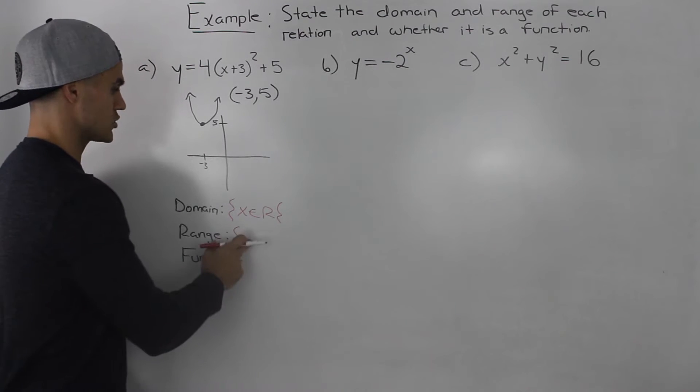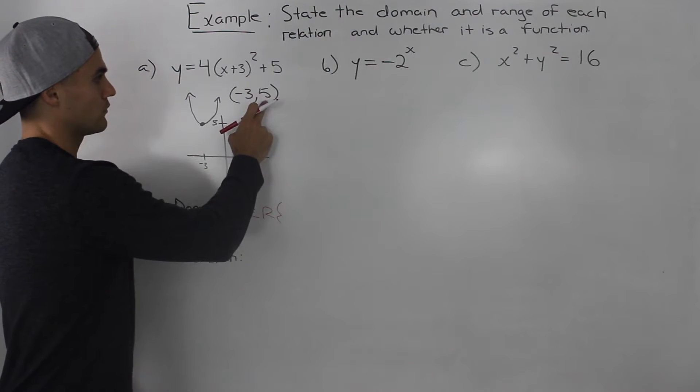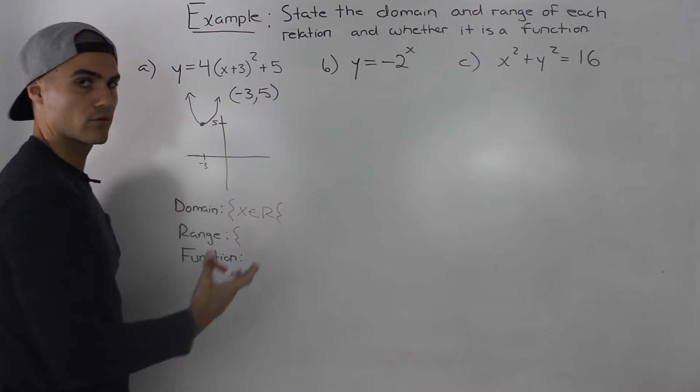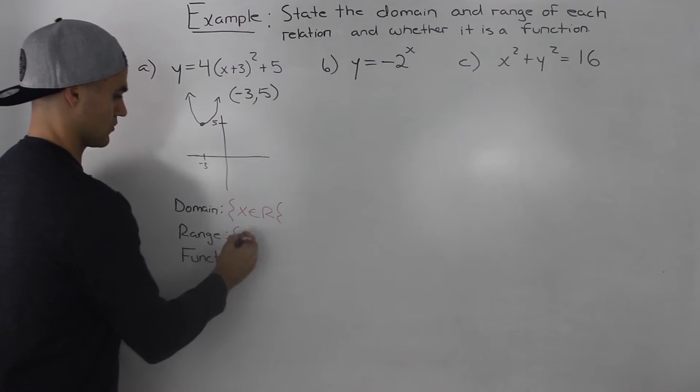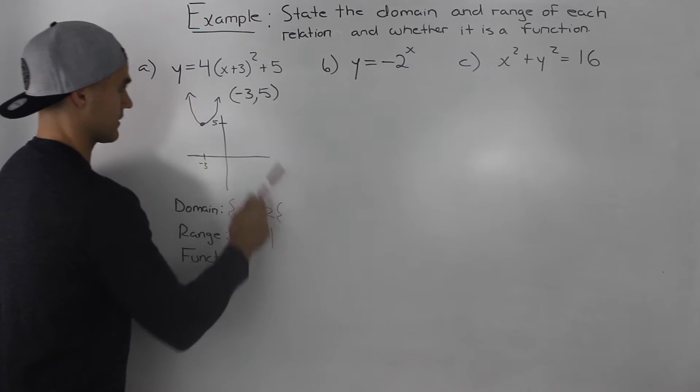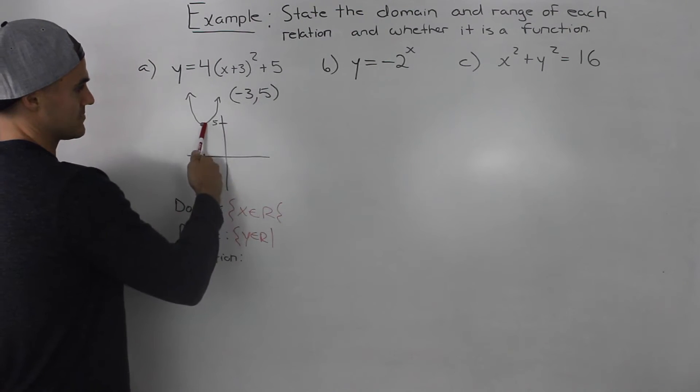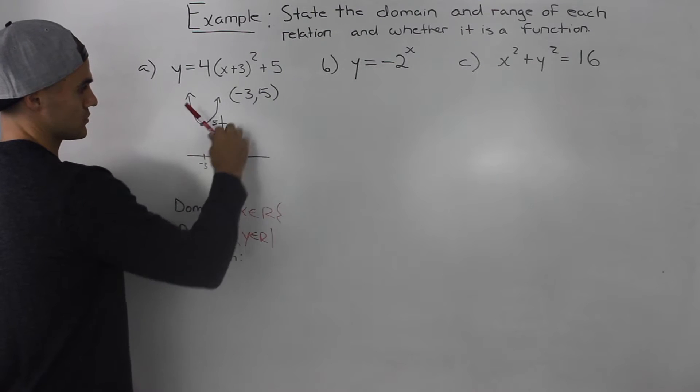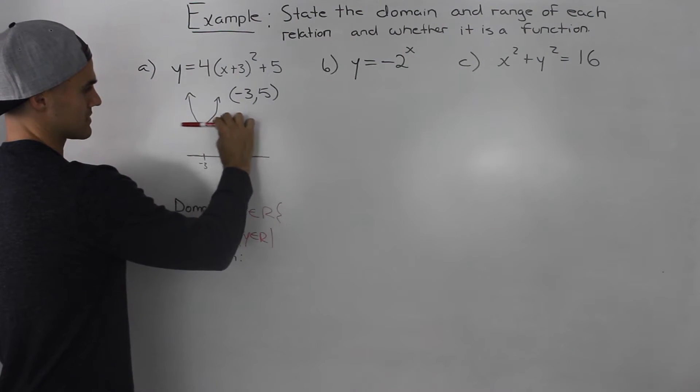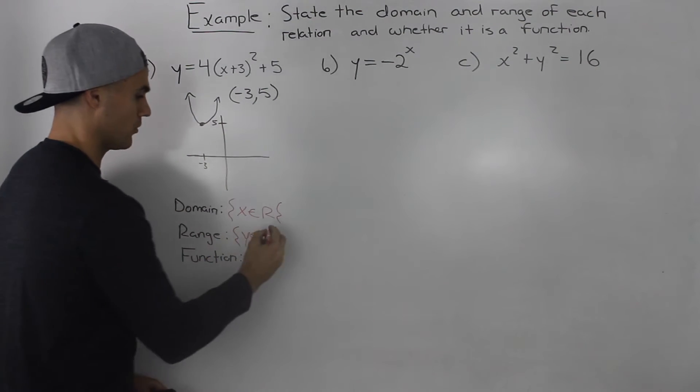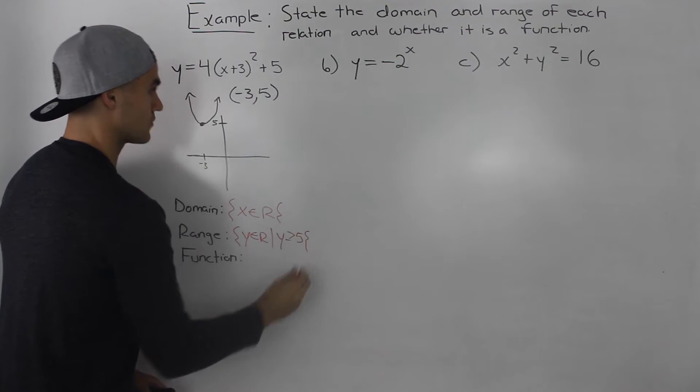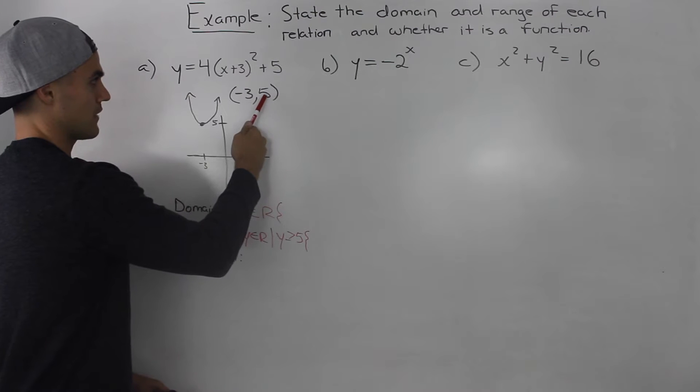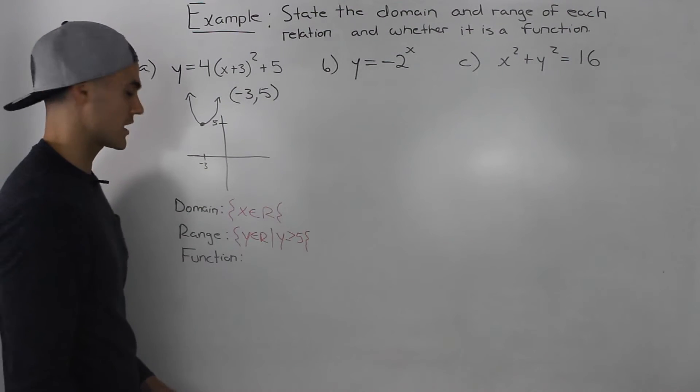Moving on to the range. The range depends on the y value of the vertex and whether the parabola is opening up or down. So the range, the y value can be anything. However, it has to be greater than or equal to a y value of five because that represents the minimum point. So y has to be greater than or equal to five, which is the minimum value of this parabola, the y value of the vertex.